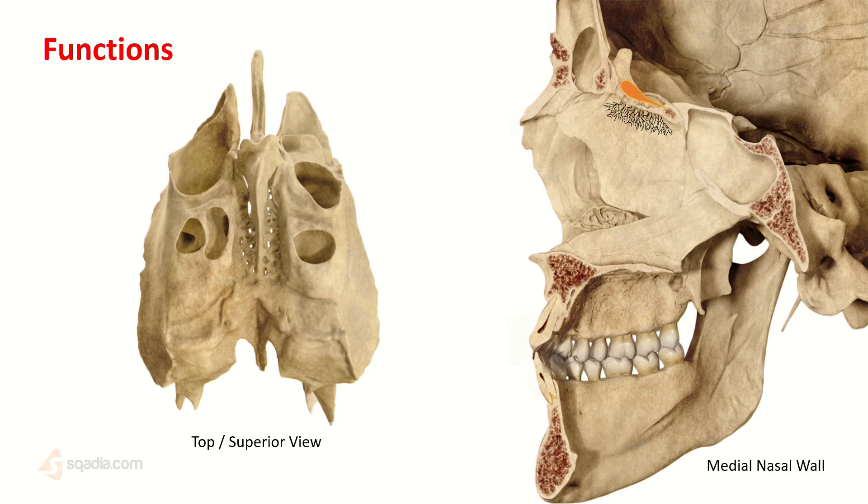The next important function is that the cribriform plate, right over here, acts as the bed plate for the olfactory bulb. Now the olfactory bulb is cranial nerve number one, the olfactory nerve. This bulb provides root for where all of the olfactory nerves enter through all of these tiny foramina and supply the nasal cavity.